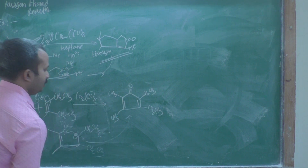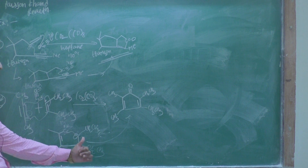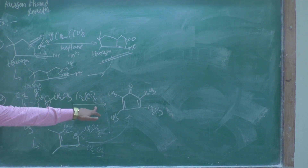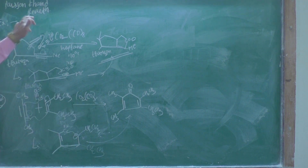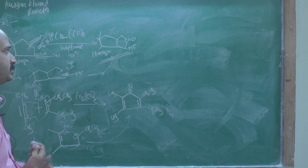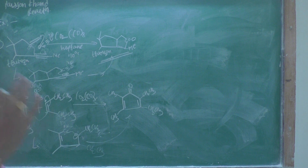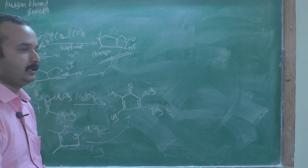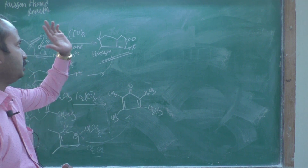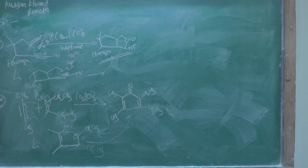So this is the simple approach to determine the product of the Pauson-Khand reaction. This is the example of the Pauson-Khand reaction. Next time we have to discuss the Bergman cyclization reaction and ring formation reactions. Thank you.